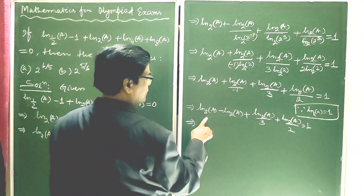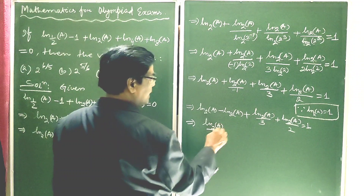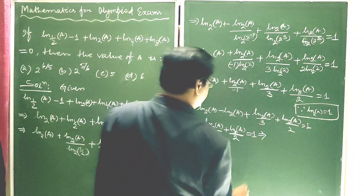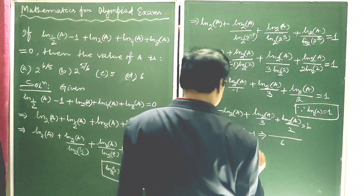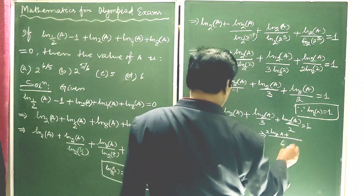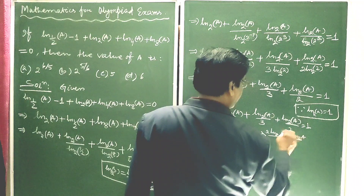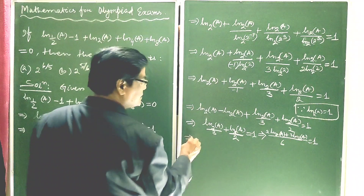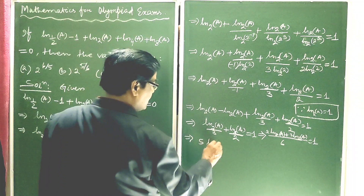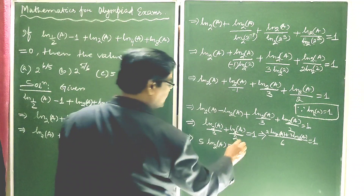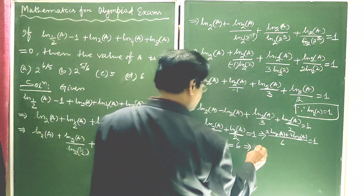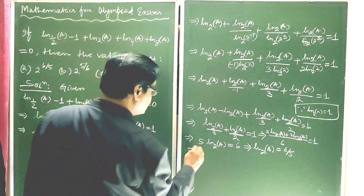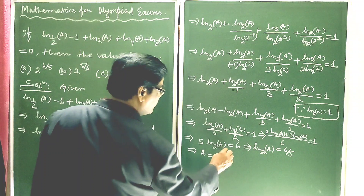So the first two terms give 0. Then ln base 2 of A divided by 3 plus ln base 2 of A divided by 2 equals 1. Taking common denominator 6: 2 ln base 2 of A plus 3 ln base 2 of A equals 6. This implies 5 ln base 2 of A equals 6, so ln base 2 of A equals 6 by 5, giving A equals 2 to the power 6 by 5.